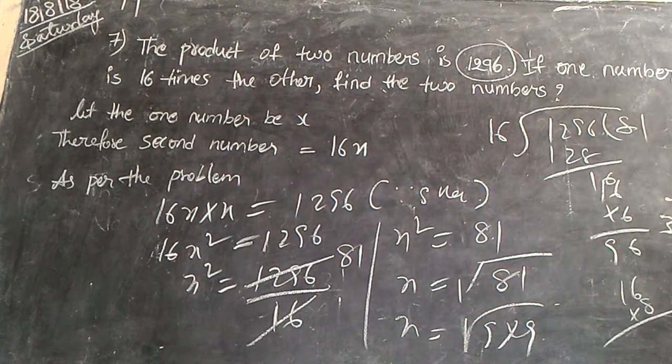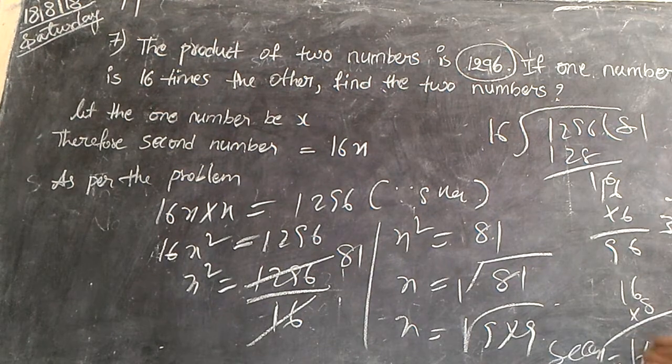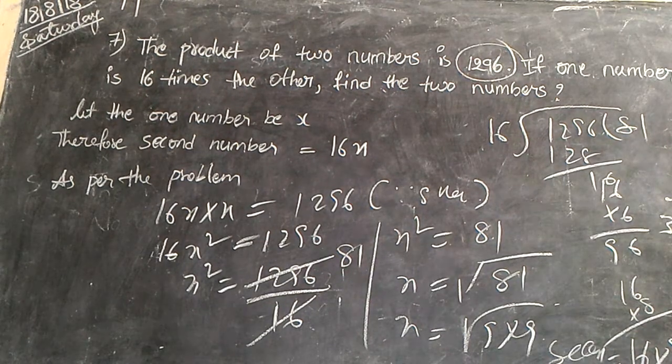So, one number is how much? Nine. The second number is equal to 16 times nine. You write it on darsha. One point.